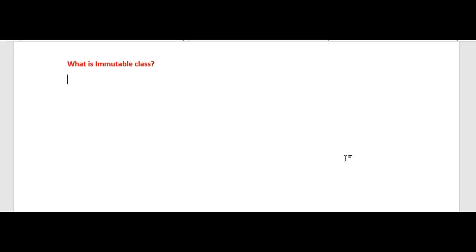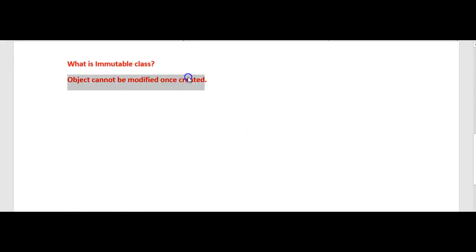We'll see what is an immutable class — we'll understand and define it. Immutable classes are those classes whose objects cannot be modified once created. Objects or instances of a class cannot be modified once they are created.